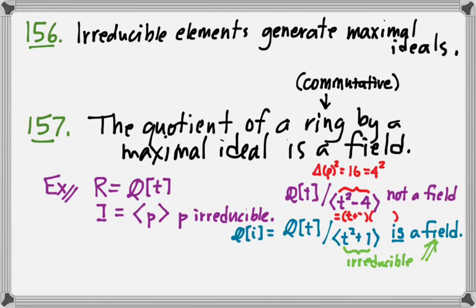What factorization does t squared minus 4 have? t plus 2, t minus 2. Yeah, difference of squares. t plus 2, t minus 2. And because each of those does not have degree 0, neither one is a unit. And therefore, this factorization counts in view of irreducibility.